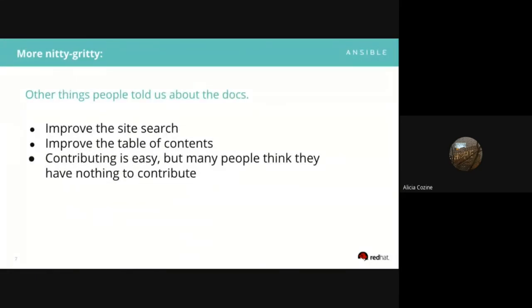Some other things people told us: the site search doesn't work — this was not news to us. Most people come to specific pages in the documentation from Google search. Improving the site search would really help people, so we're going to dig into that. We have an internal tool that we use for the site search which has not been optimized, and we will start looking at whether we can respond to that feedback. Also, finding things from the left-hand navigation doesn't make a lot of sense, so we're going to look at improving that.